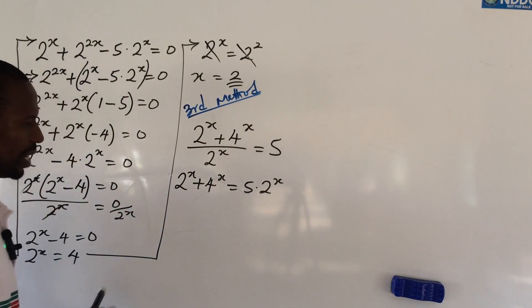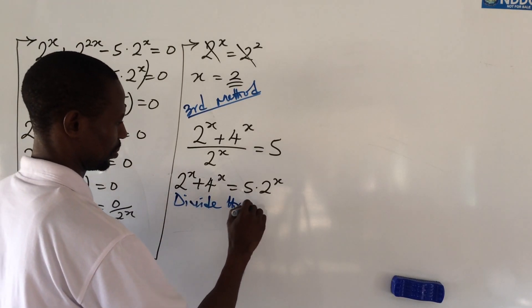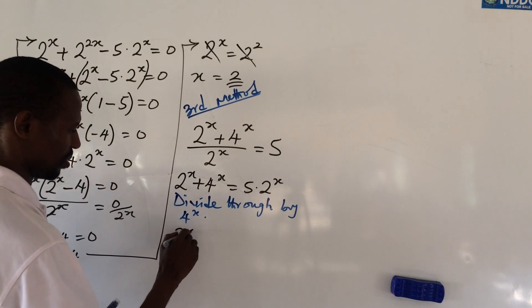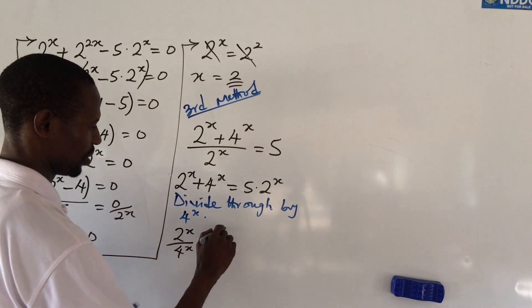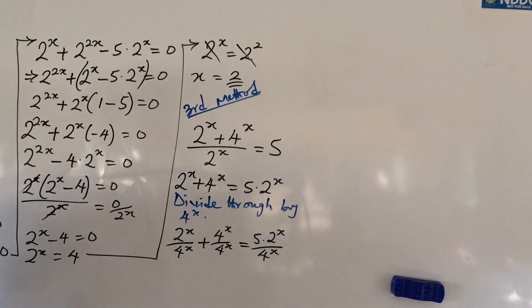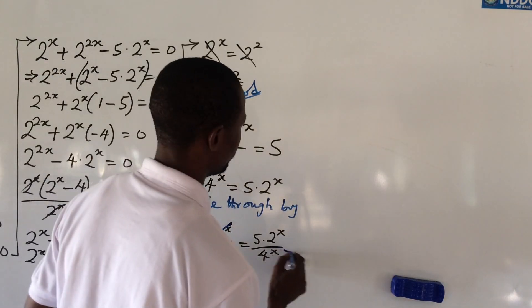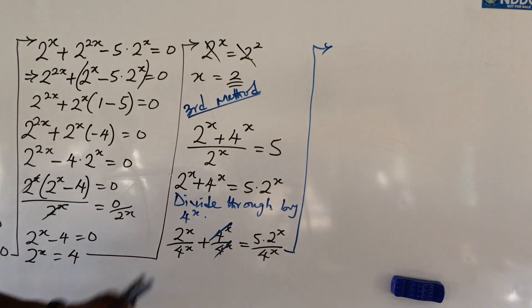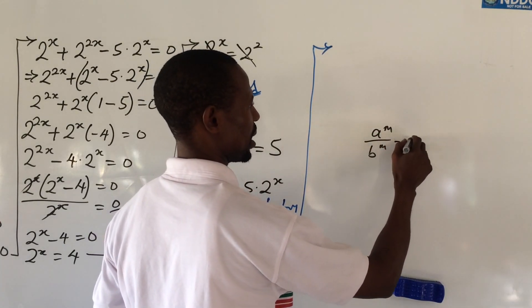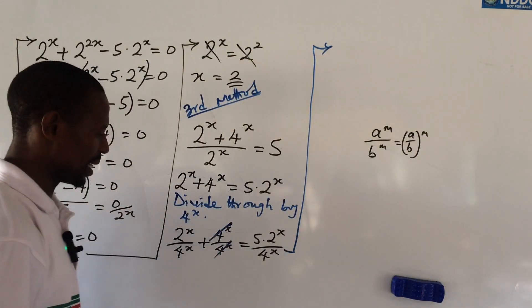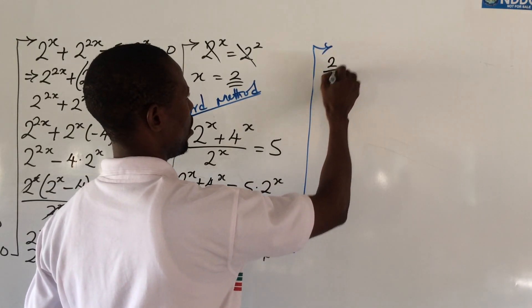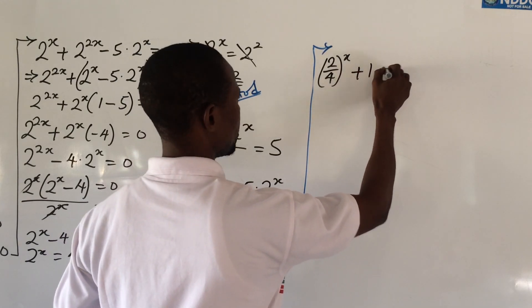Now we divide through by 4^x. This gives us 2^x / 4^x + 4^x / 4^x = 5 · 2^x / 4^x. Applying the law of indices — a^m / b^m = (a/b)^m — the expression becomes (2/4)^x + 1 = 5 · (2/4)^x.